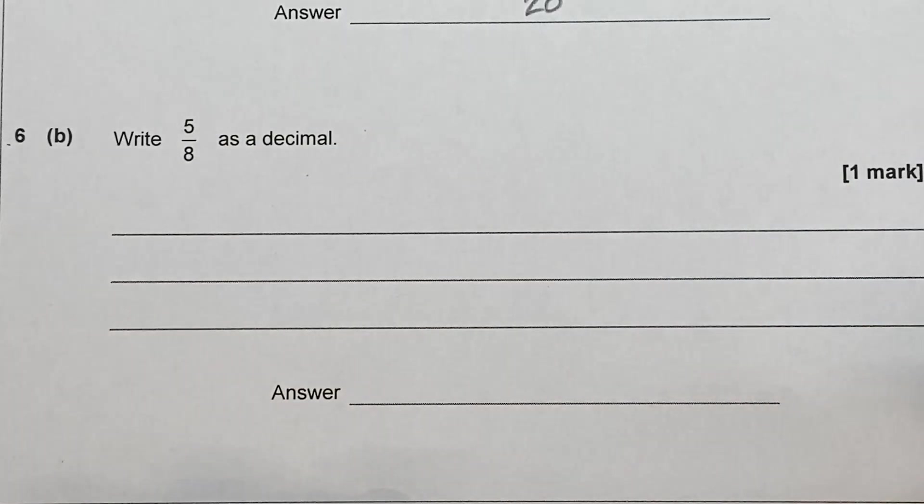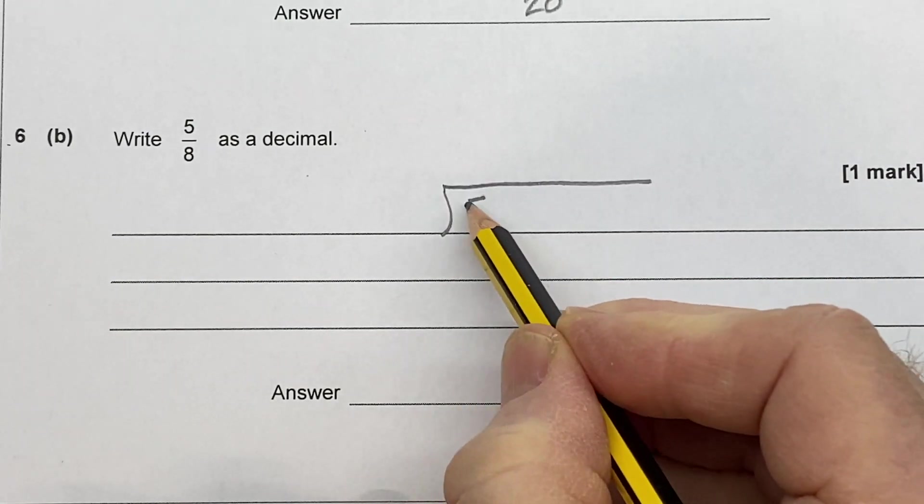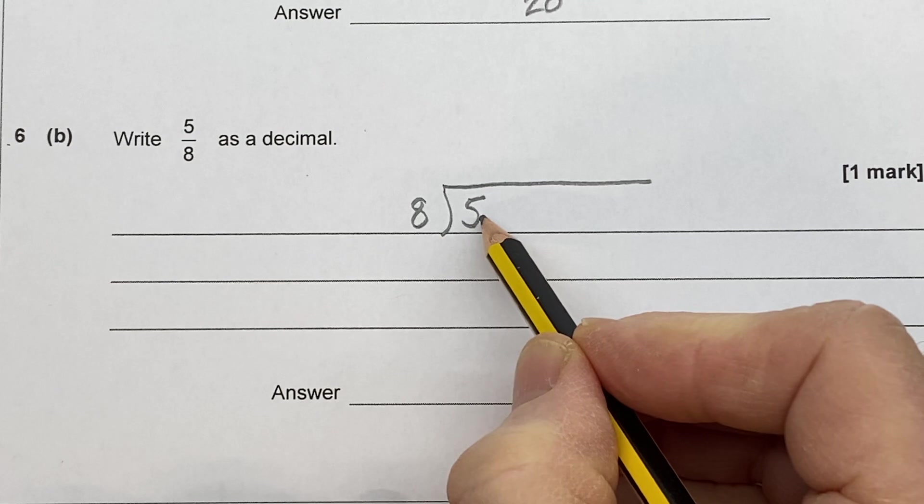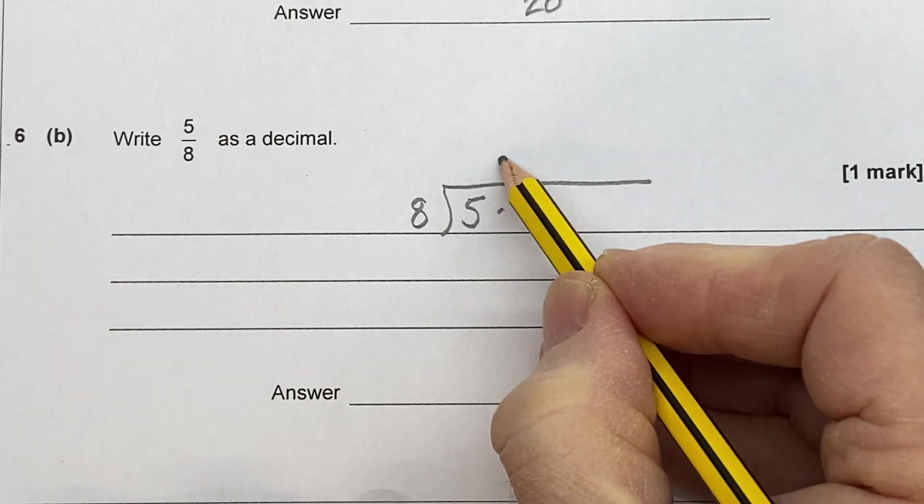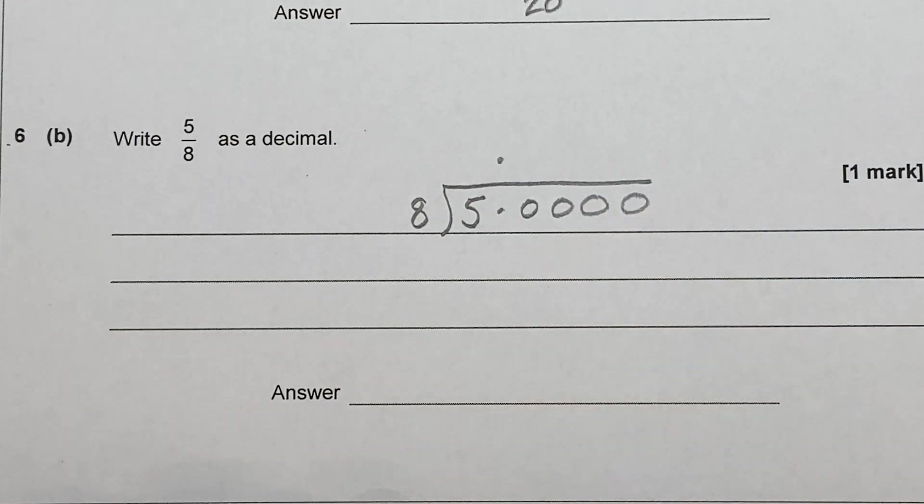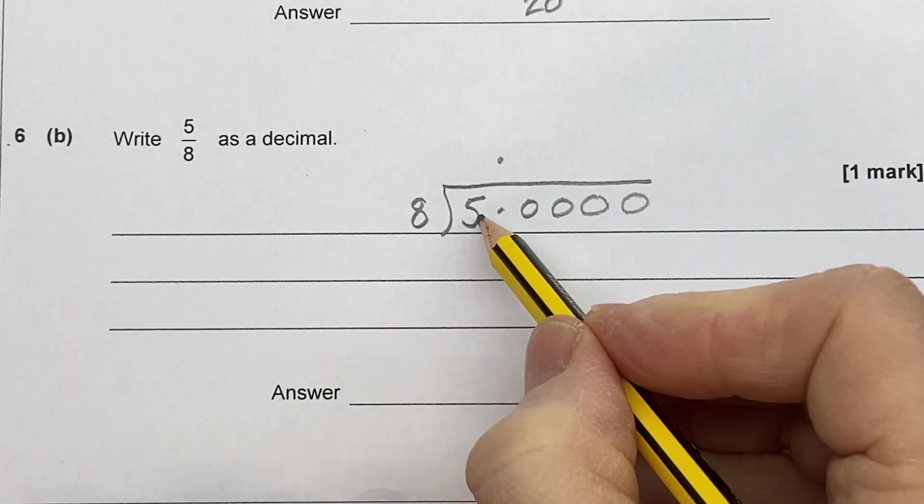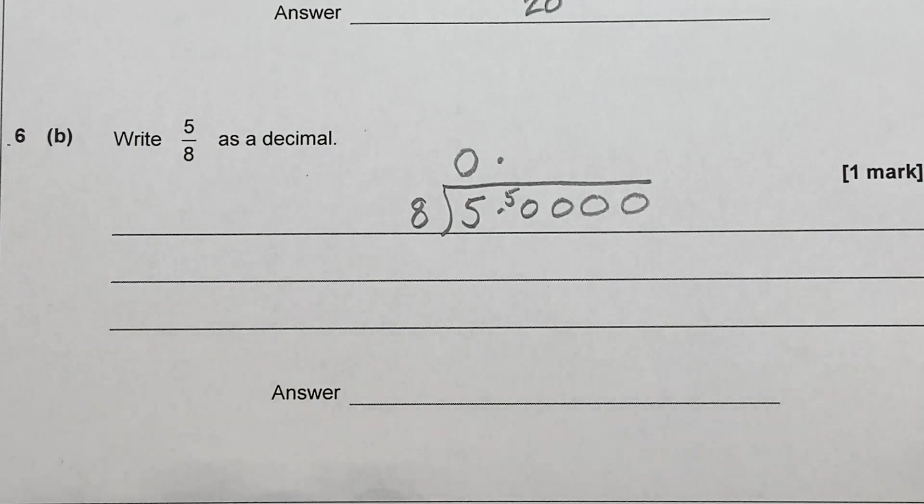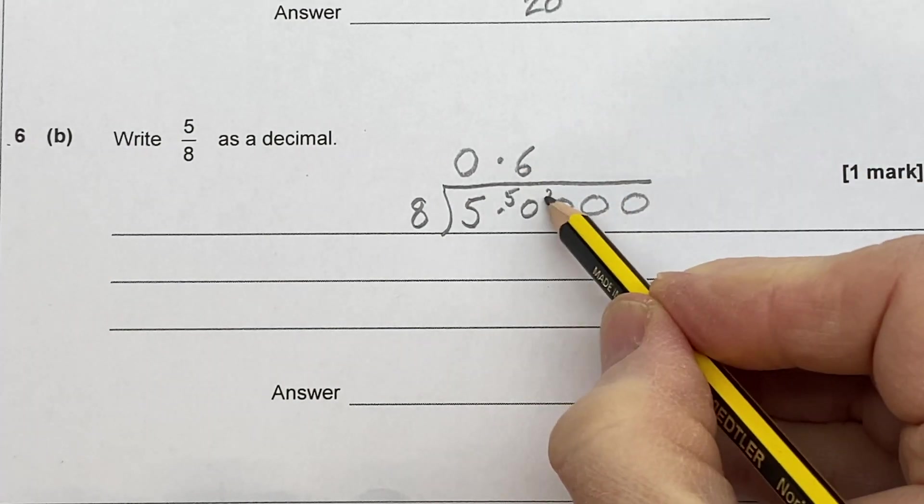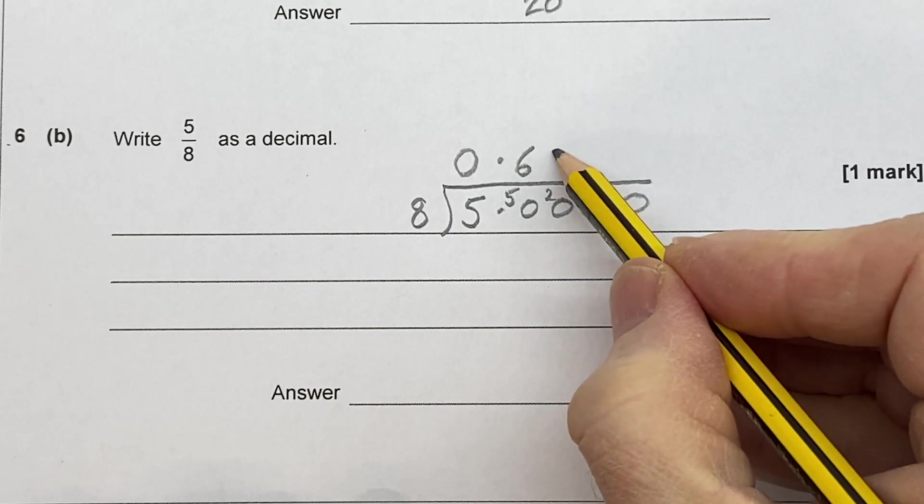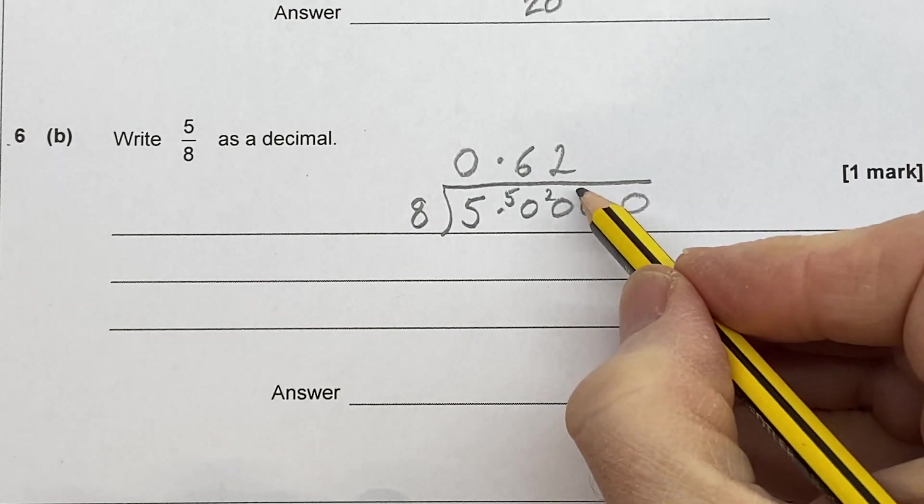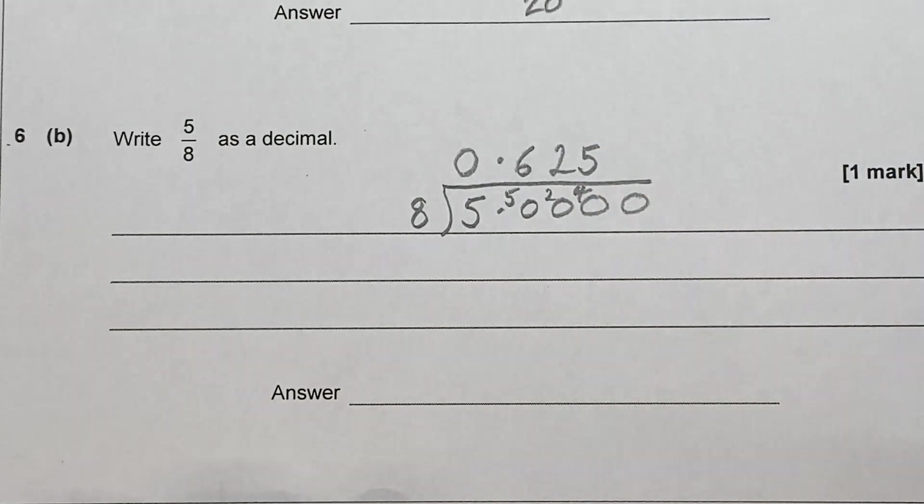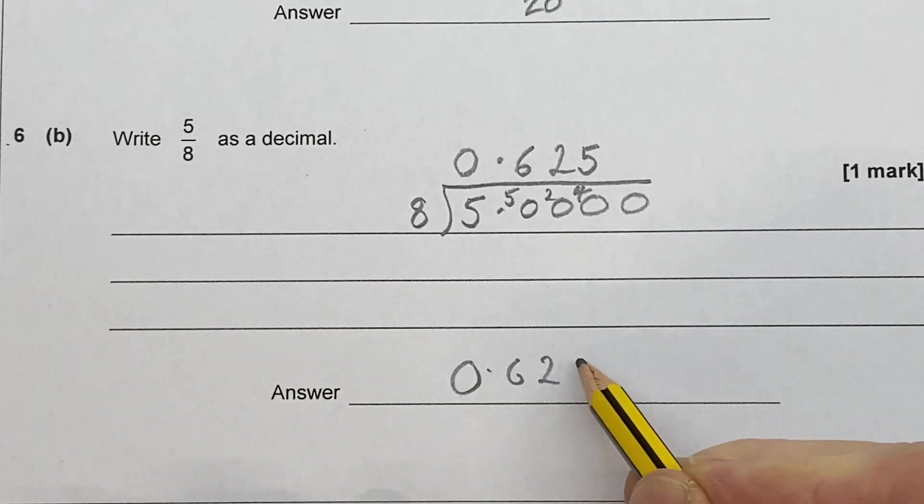To write 5 eighths as a decimal. Now to change a fraction to a decimal, the easiest thing is to do the top divided by the bottom. There's the top, the numerator divided by the denominator. Put a decimal point there and there. And put some zeros. You can have as many zeros as you like. We're not going to need all those, but hey. 8 into 5 will not go. So the 5 comes with us. 8 into 50 goes 6 times, because 6 eighths are 48, with 2 left over. 8 into 20 goes twice, because 2 eighths are 16, with 4 left over. And 8 into 40 goes 5 times. And we can't go any further. So that's the final answer, 0.625.